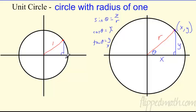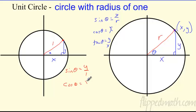With a reference triangle, we drop a perpendicular line and make a triangle with theta. This point is over x, up y. The sine of theta is opposite over hypotenuse, so y over r. Cosine is x over r. In the unit circle with radius one, y is sine and x is cosine — pretty awesome.